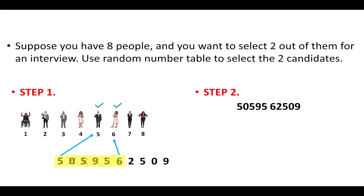Thus we have selected 2 persons randomly from a population of 8 people. This example dealt with single digit numbers. Now we will see an example with 2 digit numbers.